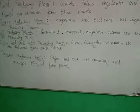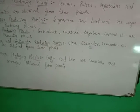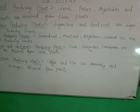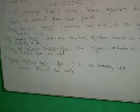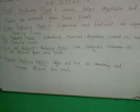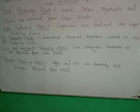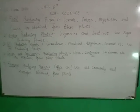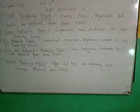Now we have spices and condiments. Next, we have beverages. Students, examples of beverage producing plants include tea and coffee.